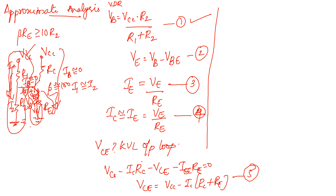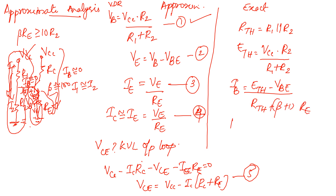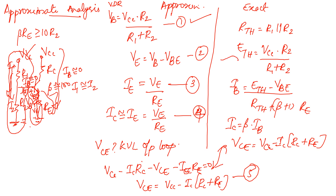Comparing the two analyses: for approximate analysis the equations are VB = VCC·R2/(R1+R2), VE = VB − VBE, IE = VE/RE, IC ≈ IE, and VCE = VCC − IC(RC+RE). For exact analysis: RTH = R1||R2, ETH = VCC·R2/(R1+R2), IB = (ETH−VBE)/[RTH+(β+1)RE], IC = β·IB, and VCE = VCC − IC(RC+RE). Note that ETH and VB are equal, and the VCE expressions are the same.